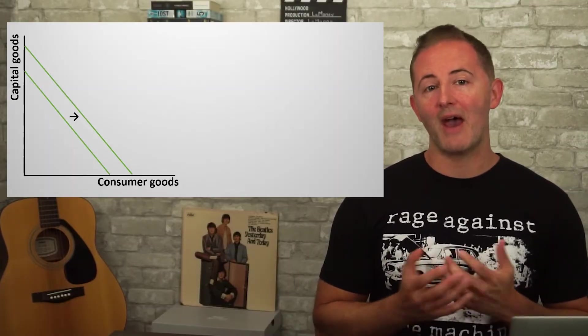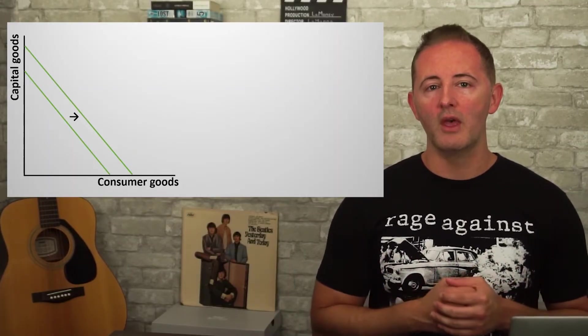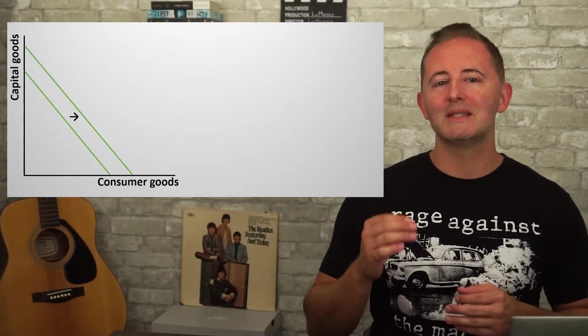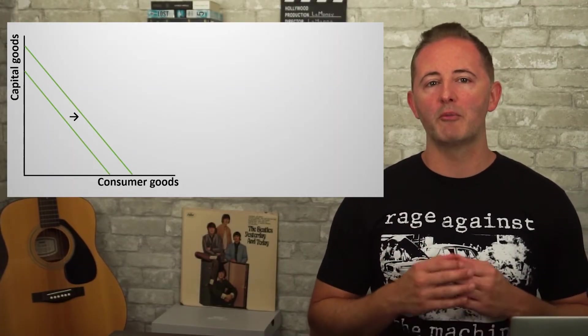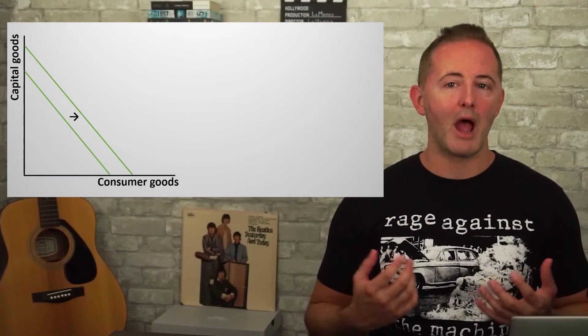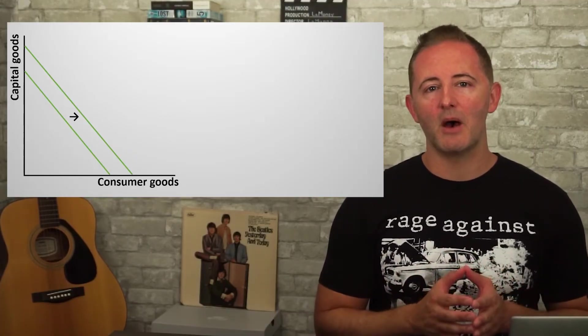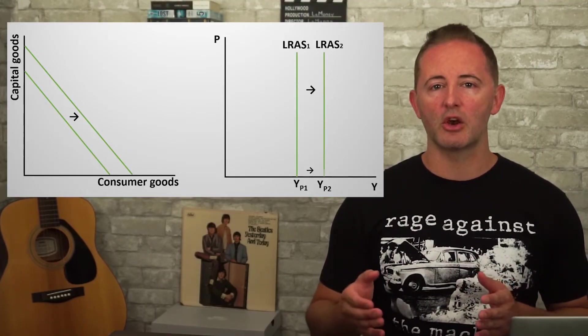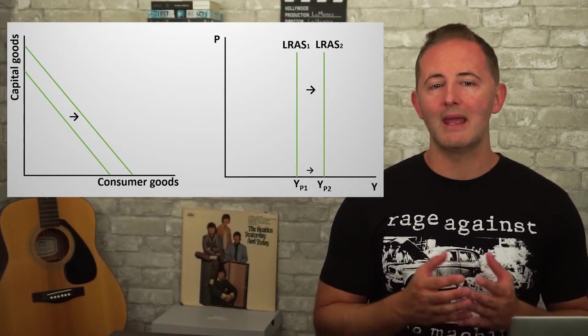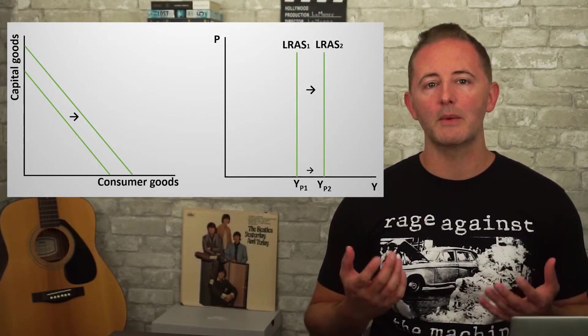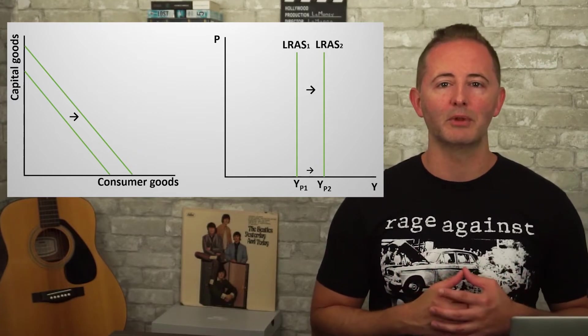We can see economic growth on our models in two ways. An outward shift of the PPC indicates economic growth — our economy is now capable of producing more output. On the AD-AS model, the LRAS curve shifting right indicates that economic growth has taken place.